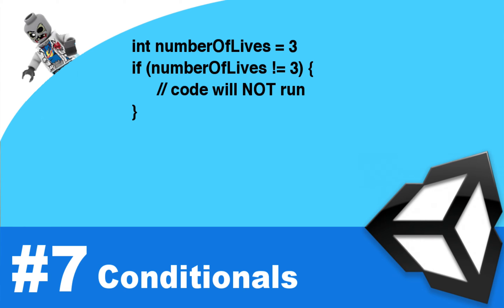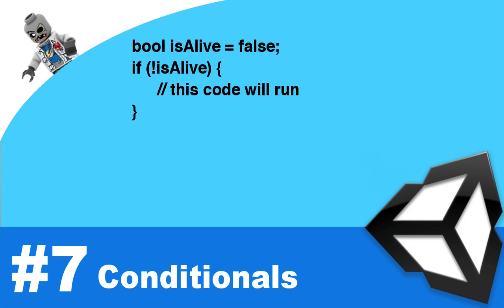You can also use the exclamation point in other ways. If you put it immediately before a Boolean value, it will switch that Boolean value to its opposite value. For instance, if `isAlive` equals false and you put an exclamation point before it in the condition, then it would be true and the code would enter that block. The same applies with the previous conditions we've just covered.